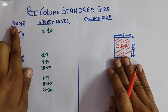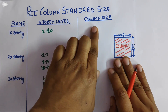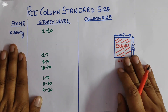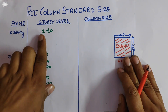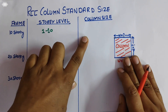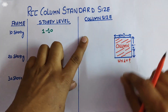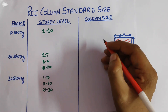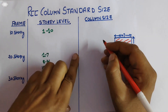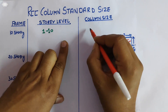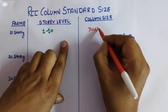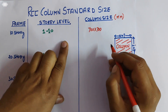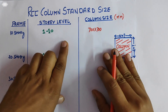I have mentioned three column frame story level column sizes, so we need to know the width and depth of the column. For a 10-story building, story level 1 to 10, this is a rough design of column for a multi-story building and it depends on the architectural planning. Generally, for a rough design for 1 to 10 story level, we take the column size as 700 by 700 mm.